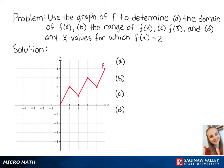For letter a, the domain of f of x is the set of all x values within the function. Looking at the graph, we can see that the smallest value of x is 0 and the highest value of x is 5, meaning x is between 0 and 5. Since the domain is inclusive on both endpoints, we can write this as [0, 5] with brackets on both endpoints.